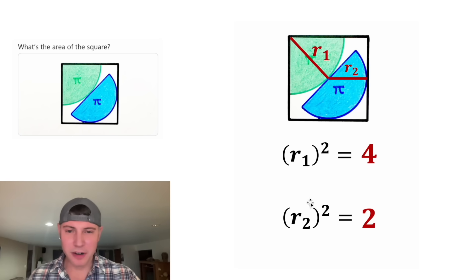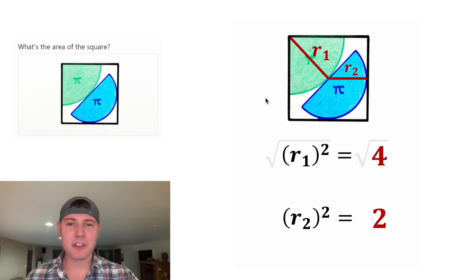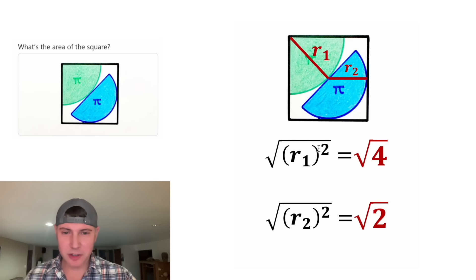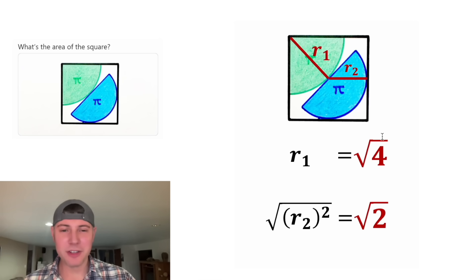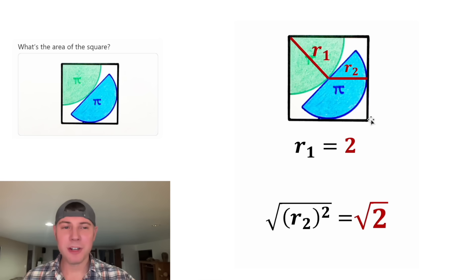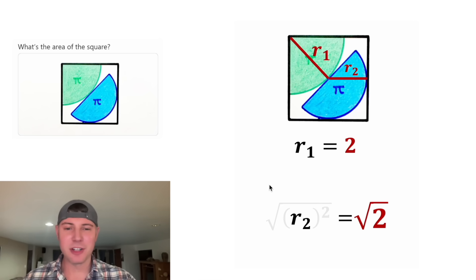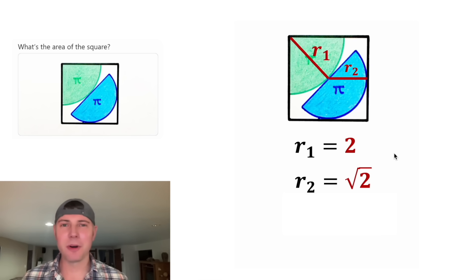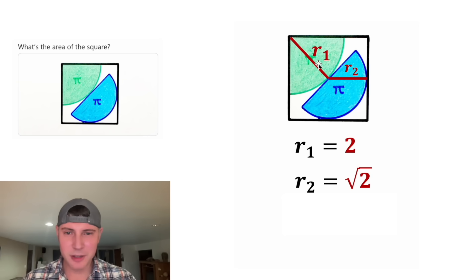Right now both our variables are being squared, so to solve them let's square root both sides of both equations. For the first one, the square root and the square cancel, and the square root of four is two, so we have r1 equals two. Then on the bottom, the square root and square cancel, and we're left with r2 equals the square root of two. Now we can update the diagram: r1 is equal to two, and r2 is equal to square root of two.